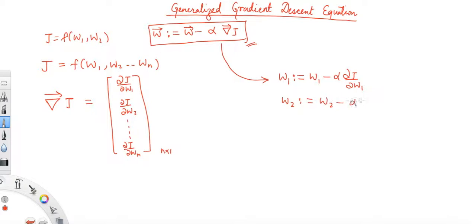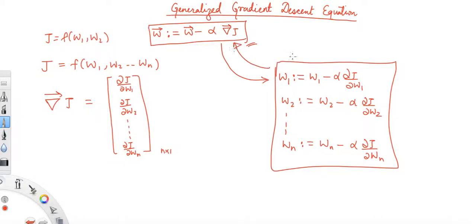w2 is assigned w2 minus alpha times del J over del w2, all the way up to wn is assigned wn minus alpha times del J over del wn. So we have these n equations which are compressed into a single vector equation.